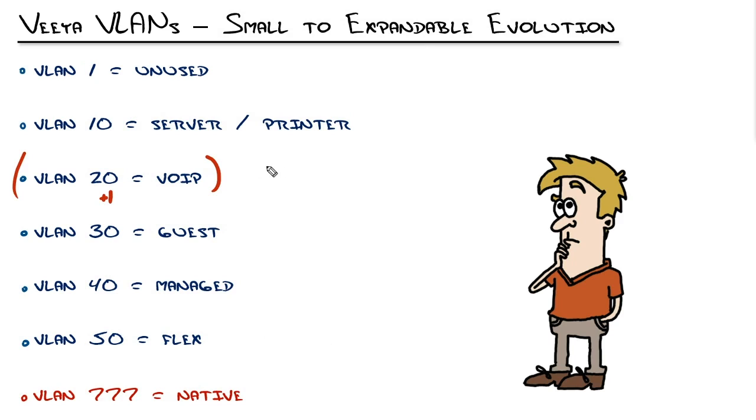If your voice over IP phones outgrow their subnet, then just add VLAN 21. That'll be the next voice over IP. And everybody recognizes and realizes the number 21 falls right in line with voice over IP.